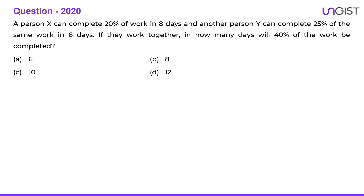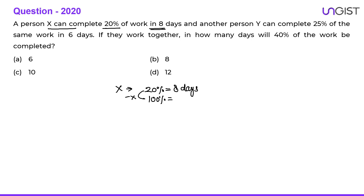Next question: A person X can complete 20% of work in 8 days. If X completes 20% in 8 days, then for 100% of the work it is 5 times as much, so 8 × 5 = 40 days. X can complete 100% of the work in 40 days.